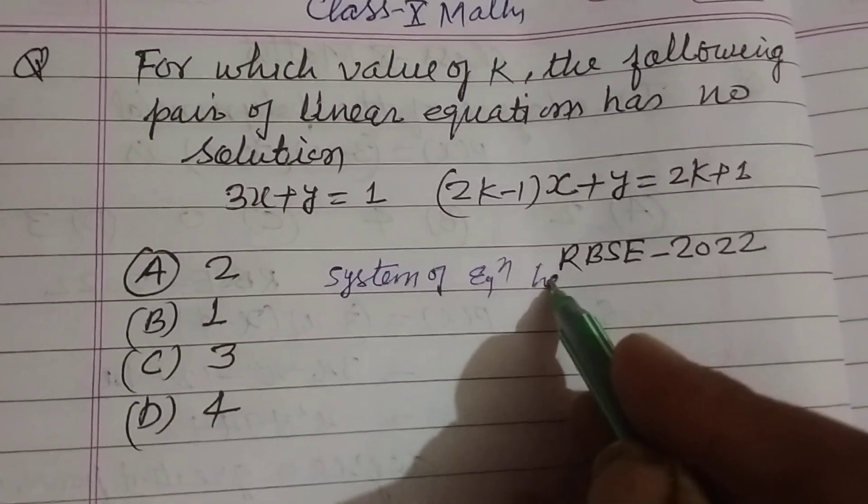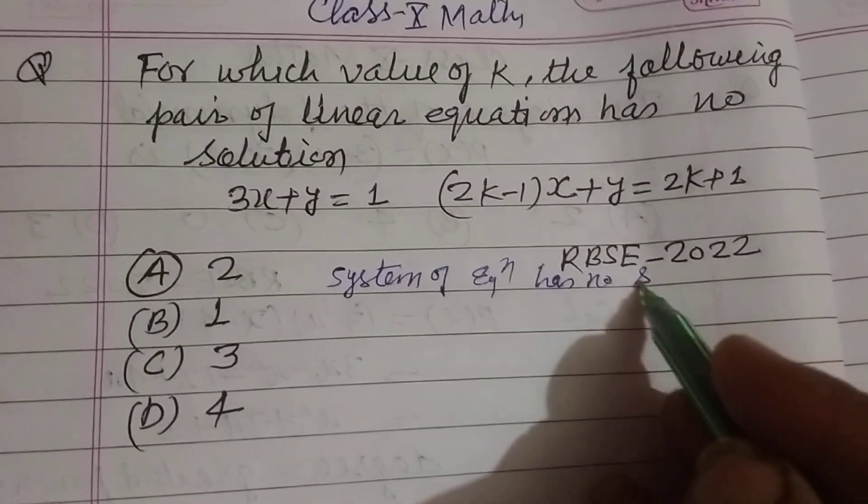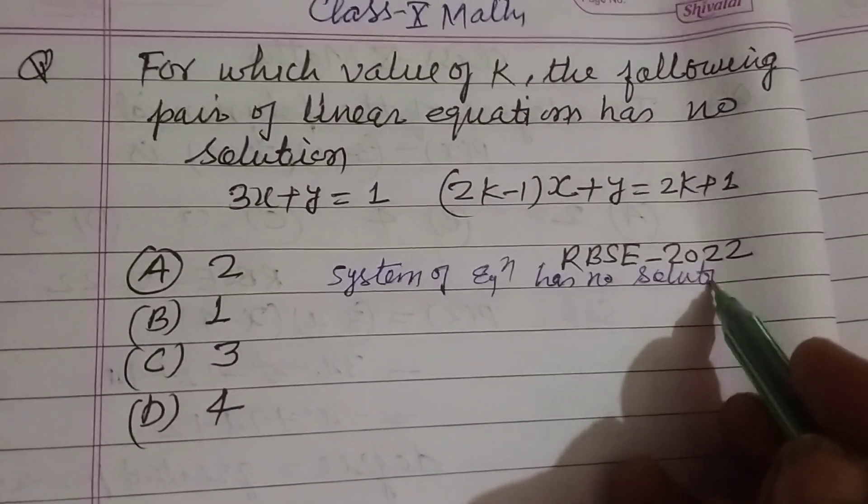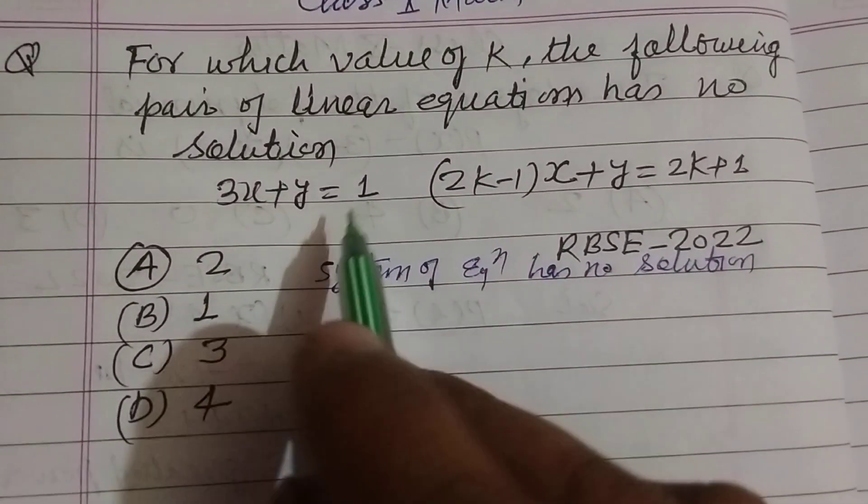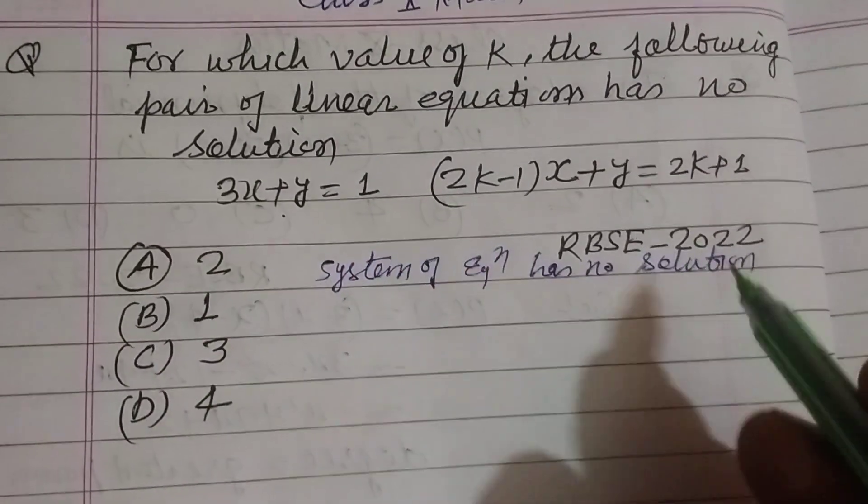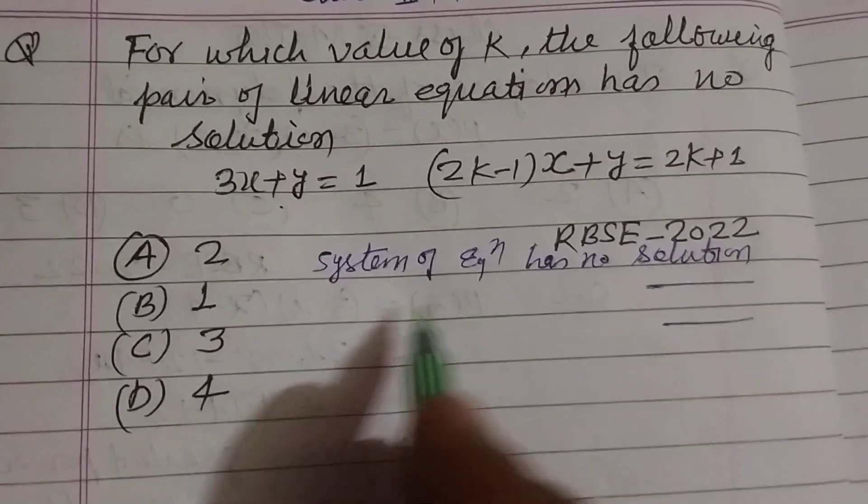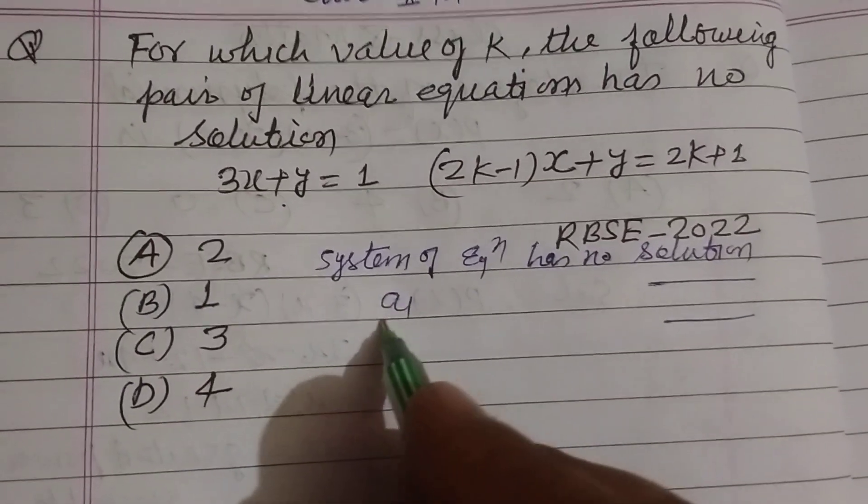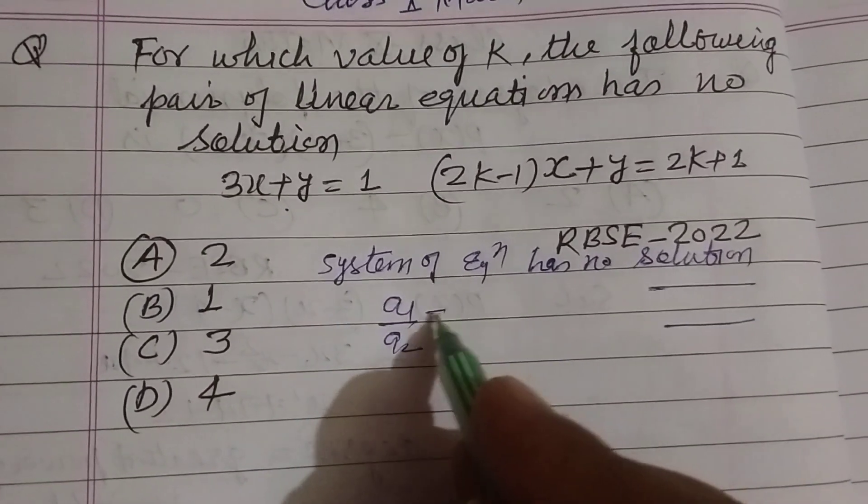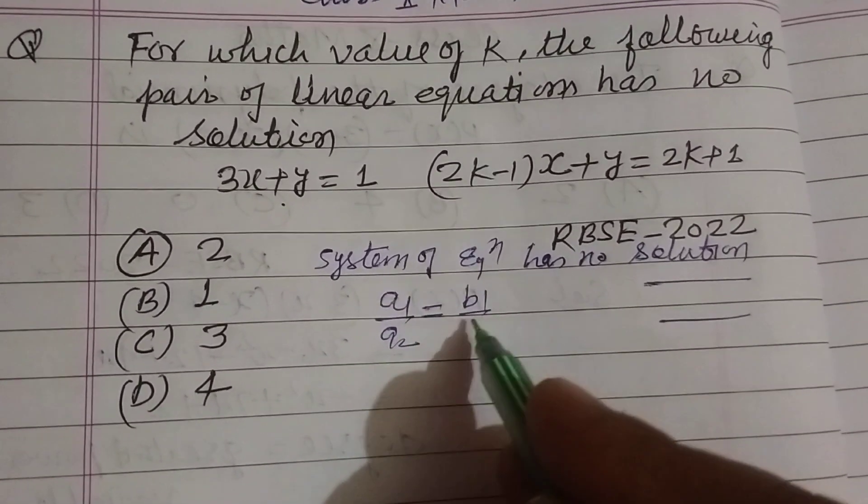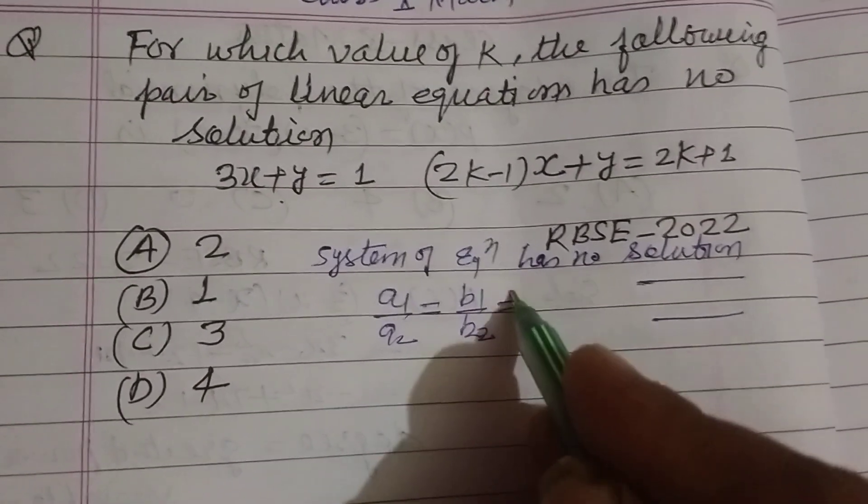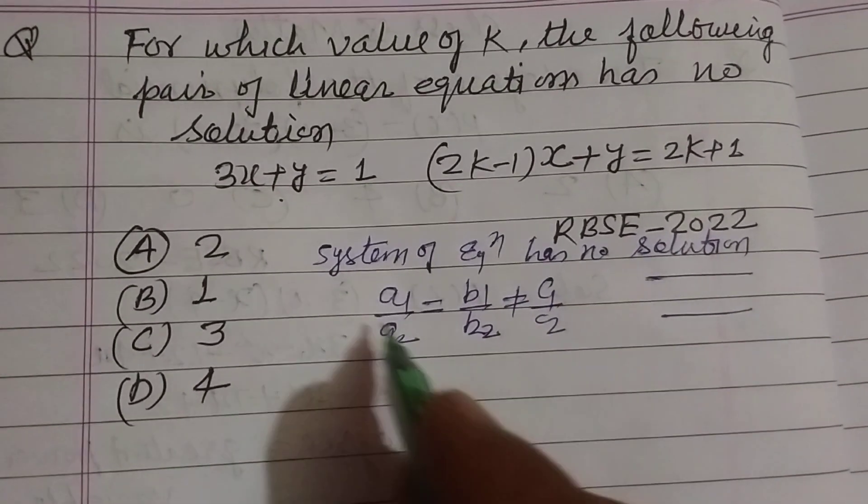...the lines represented by the given equations are parallel to each other. Therefore, they have no solution. The mathematical condition is: a1/a2 = b1/b2 ≠ c1/c2.